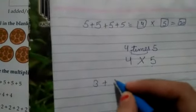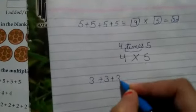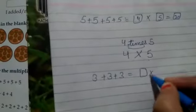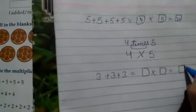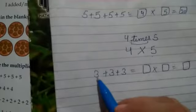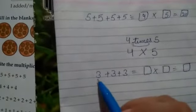See one more question. If question is given to you like this way: 3 plus 3 plus 3 equals to dash multiply dash equals to dash. Then how you will do that? Count how many times this 3 is given: 1, 2, 3.